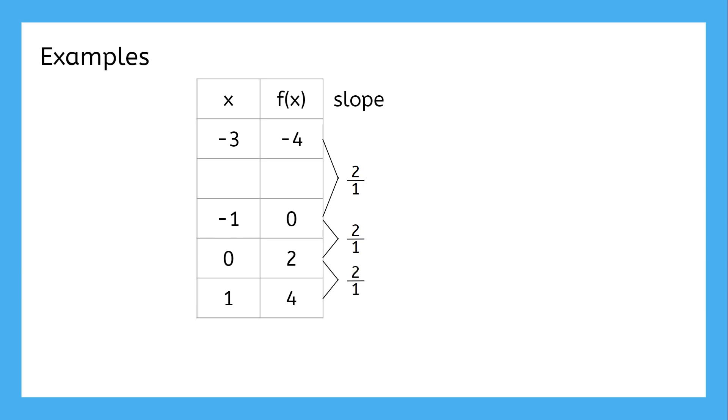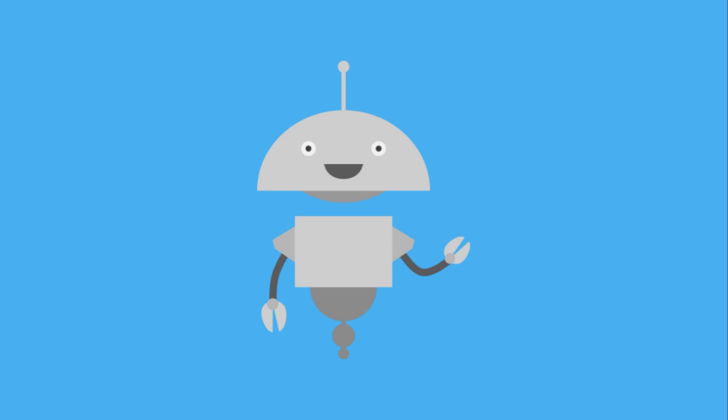The slope is the same for all the data, so this data is growing linearly. It's important to know whether data is growing in a straight line or exponentially, and the way to tell is by checking the slopes. Either the slope is the same for all the data, or it gets steeper and steeper by the same ratio. In the next lesson, we're going to continue comparing linear and exponential growth by looking at their graphs. See you then!